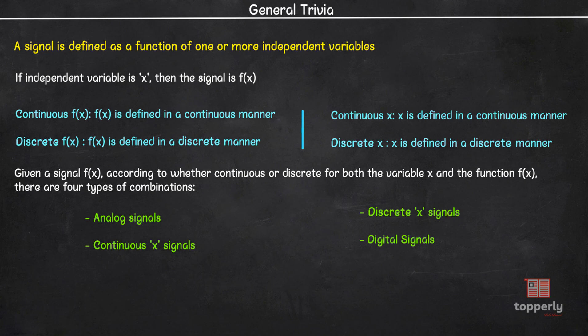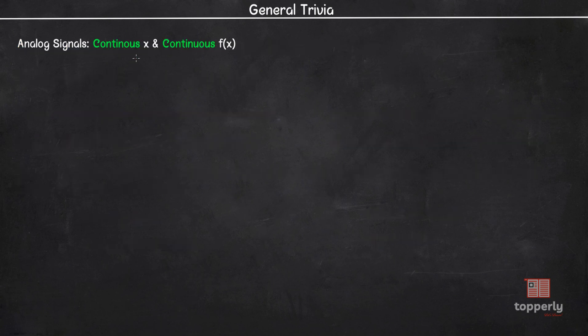Now in analog signals, we have both continuous x and continuous f. The graph of an analog signal looks like this. That is, x is defined continuously and similarly function f is defined continuously.